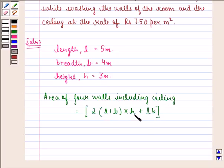Now we simply put in the values of length, breadth and height. From this we get twice of 5 plus 4 into 3 plus 5 into 4.